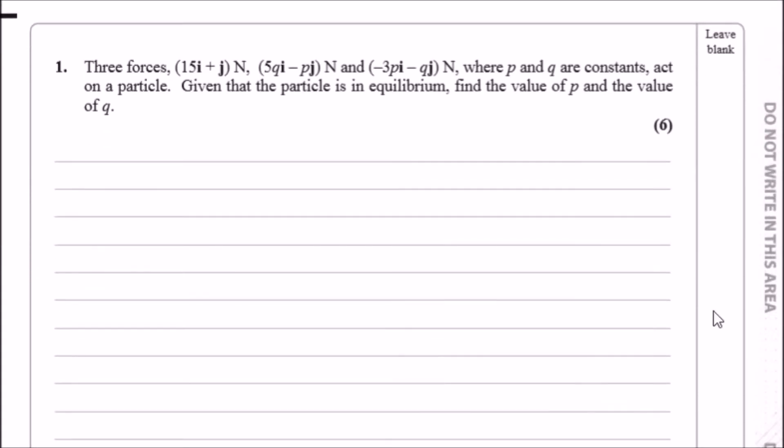Three forces: (15i + j) N, (5qi - pj) N, and (-3pi - qj) N, where p and q are constants, act on a particle. Given that the particle is in equilibrium, in other words the resultant forces equal zero, find the values of p and q. This means we need to add all these forces, F1, F2, F3, and they all sum to zero.